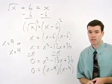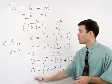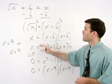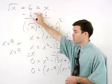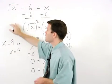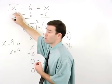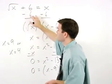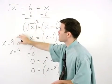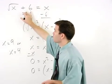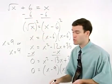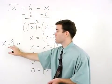And as your last step, make sure to check both answers back in the original equation. If we plug a 9 in for x, we have the square root of 9 or 3 plus 6 equals 9. And since 3 plus 6 equals 9 is a true statement, our first answer works.